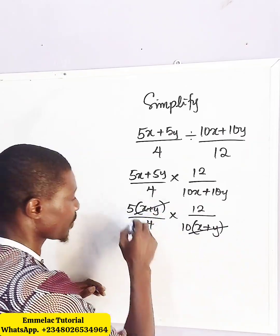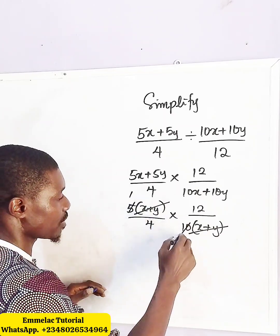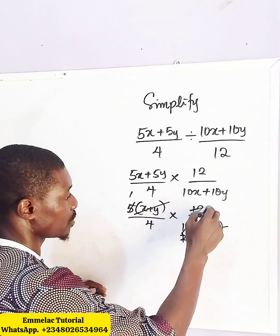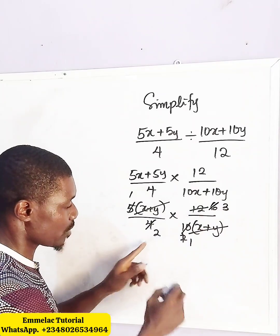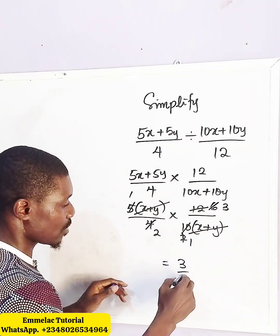So this will eliminate this. We simplify: 5 and 10 reduce, 4 and 12 reduce, giving us 3 over 2 as the final answer.